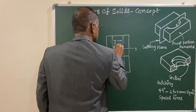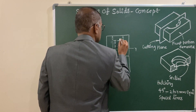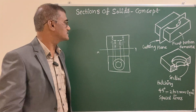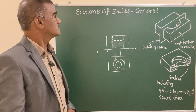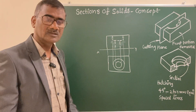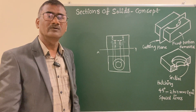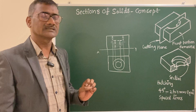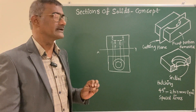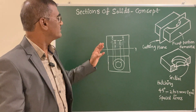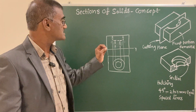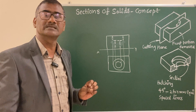Now you can see the projections of the solid in simple position. In the orthographic view of complicated objects - complicated in the sense that you have too many hidden edges - when too many hidden edges are represented with a dashed line, understanding the component becomes difficult.